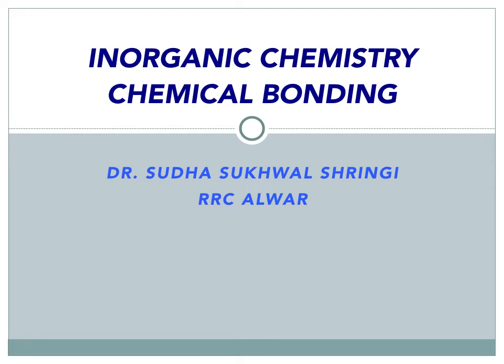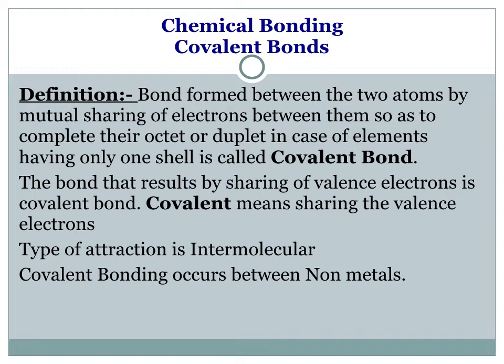Welcome students. In this video of inorganic chemistry, we shall be learning about chemical bonding. To begin with, let us study what is a covalent bond. The bond formed between two atoms by mutual sharing of electrons between them, so as to complete their octet or duplet in case of elements having only one shell, is called a covalent bond. Covalent means sharing the valence electrons, so basically the bond formed by sharing of valence electrons is a covalent bond.